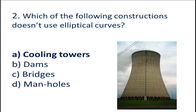Question number 2: Which of the following constructions does not use an elliptical curve? A. Cooling towers, dams, bridges, manholes. Friends, we know dams, bridges, and manholes all have elliptical curves, but a cooling tower does not have a parabolic or elliptical curve — it has a hyperbolic curve. So the answer will be A. Cooling tower.